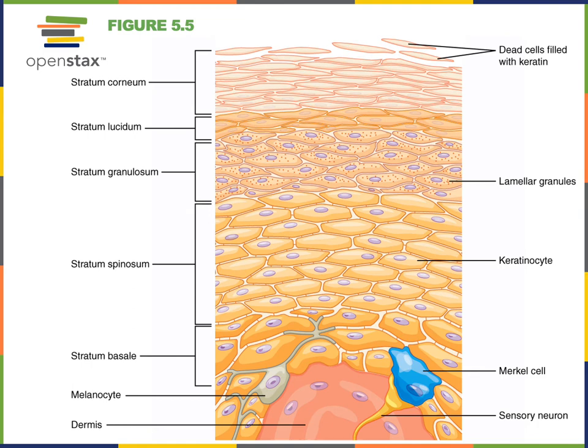Merkel cells are a specialized type of neuroepithelial cell — a sensory receptor cell — important for the sense of touch. They detect changes in the shape of the epidermis and relay that information to sensory neurons.